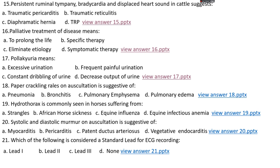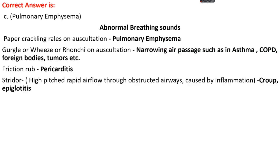Question number 18. Paper crackling râles on auscultation is suggestive of: options A, pneumonia; options B, bronchitis; option C, pulmonary emphysema; options D, pulmonary edema. The right answer is option C, pulmonary emphysema. Abnormal breathing sounds: paper crackling râles on auscultation represents pulmonary emphysema; gurgling, wheezing, or ronchi sounds represent narrowing air passage, as in asthma or chronic obstructive pulmonary disorders; friction rubs indicate pericarditis; stridor — high-pitched rapid airflow through obstructed airway due to inflammation — is mainly seen in croup or epiglottitis.